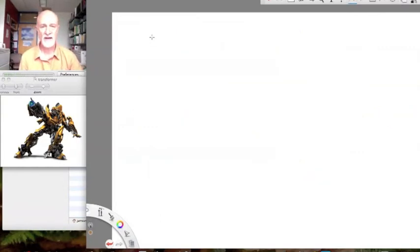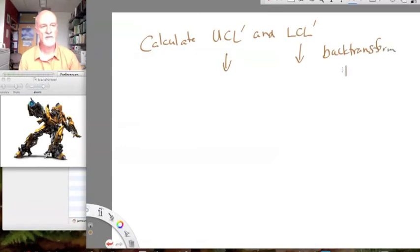What we need to do is calculate the upper confidence limits and the lower confidence limits for the transformed data and back transform those. Very important. The principle is you have done your calculations of the standard error on the transformed data, so you need to set those confidence limits in the transformed realm and then back transform those.